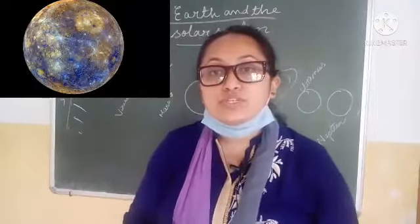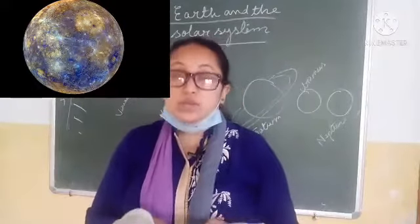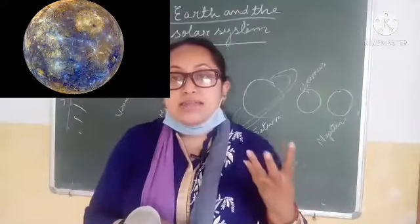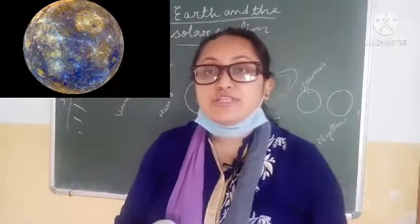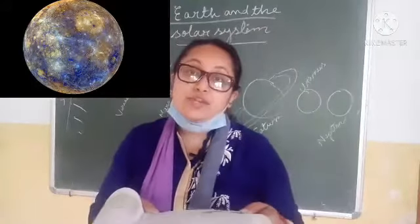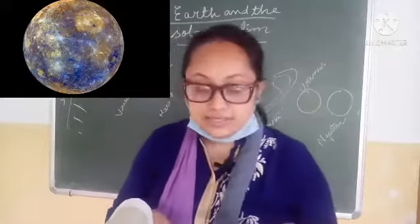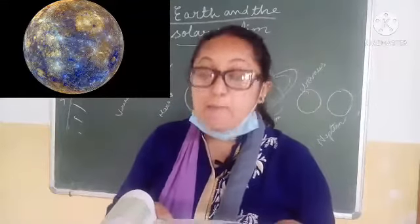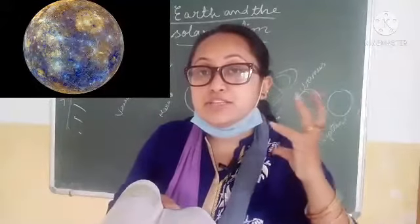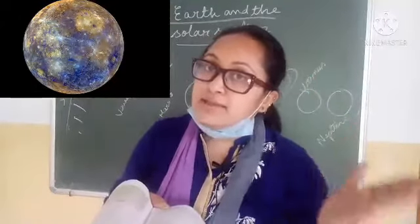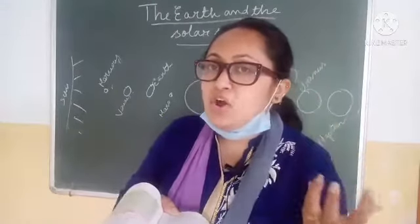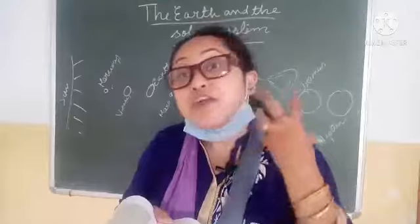Mercury is the planet closest to the sun. As it is very close to the sun, it has very large differences in temperature. During the day it is 400 degrees Celsius, and at night it is minus 170 degrees Celsius. So in the day it is very hot and at night it is very cold.